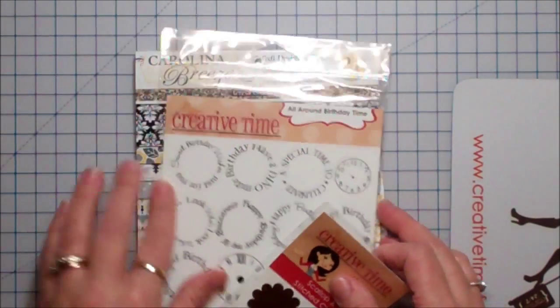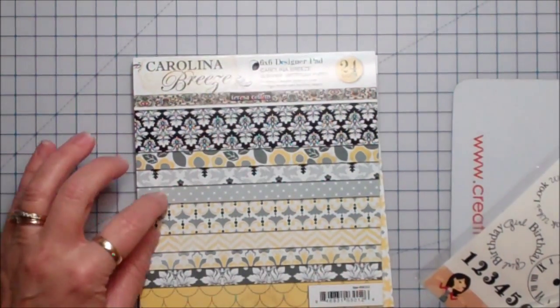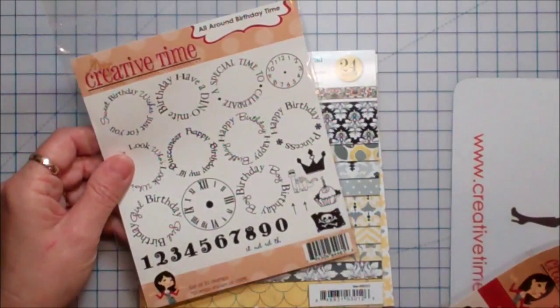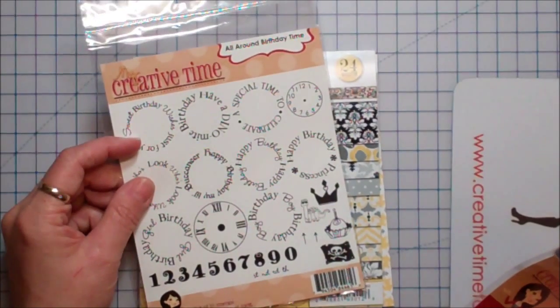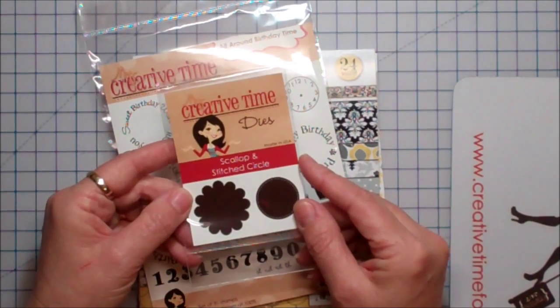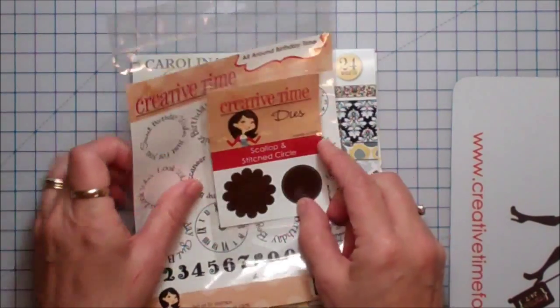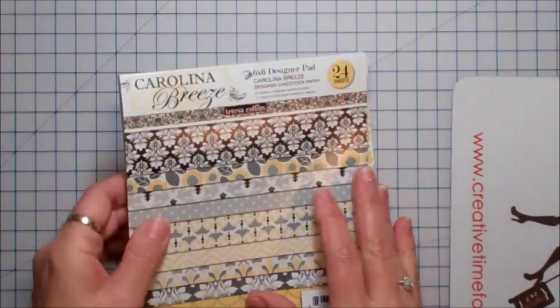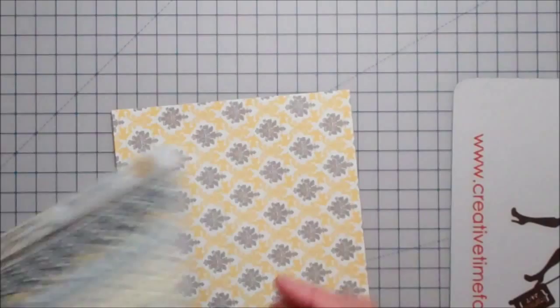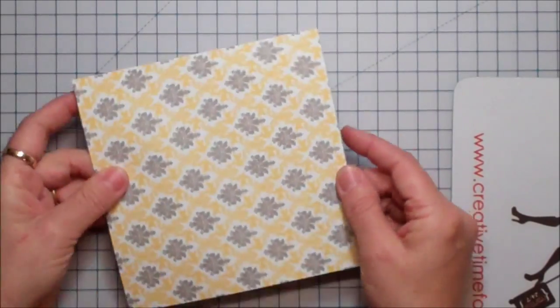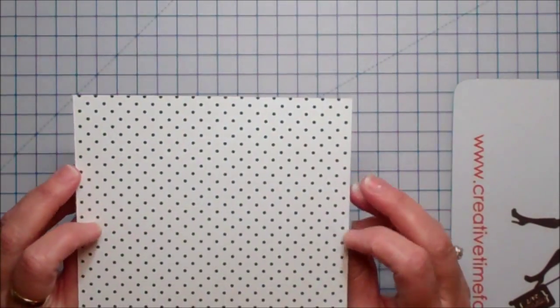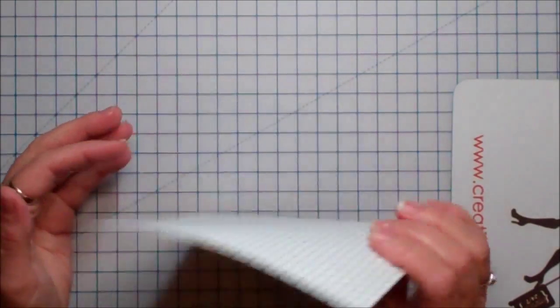I'm going to use Teresa Collins Carolina Breeze paper, the 6x6 pad, and my Creative Time All-Around Birthday Time stamps and the My Creative Time scalloped and stitched circle. I pulled out the color I wanted and just cut off the edge, so now it's a 6x6 square. You can use any two-sided paper at 6x6.